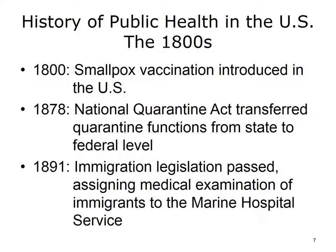The 19th century saw some landmark developments in U.S. public health. In 1800, the smallpox vaccination was introduced into the country. In the late 1800s, two acts were passed that brought an increasing level of federal activity into public health. The National Quarantine Act of 1878 started the transfer of quarantine functions from state to federal level, to the Marine Hospital Service. In 1891, immigration legislation was passed that assigned the medical examination of immigrants to the Marine Hospital Service.